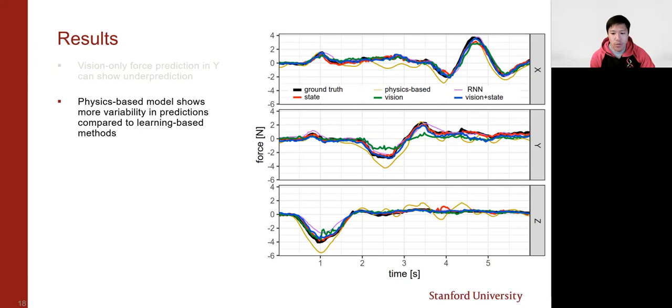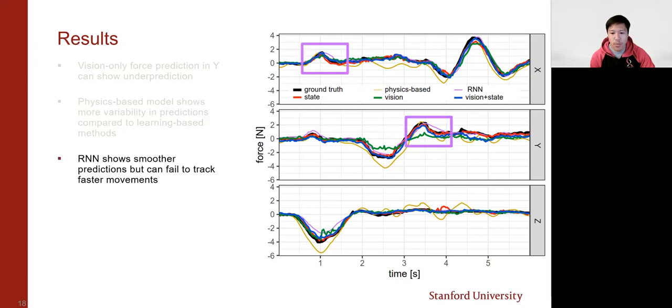The recurrent neural network is shown in purple and gives a smoother prediction compared to the noisy estimates from our single-time point-type networks, but they don't seem to capture the faster transitions of force as can be seen and highlighted in the purple boxes.